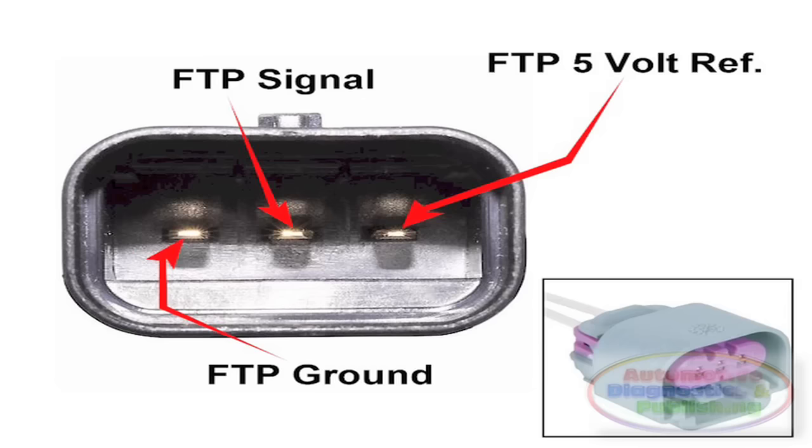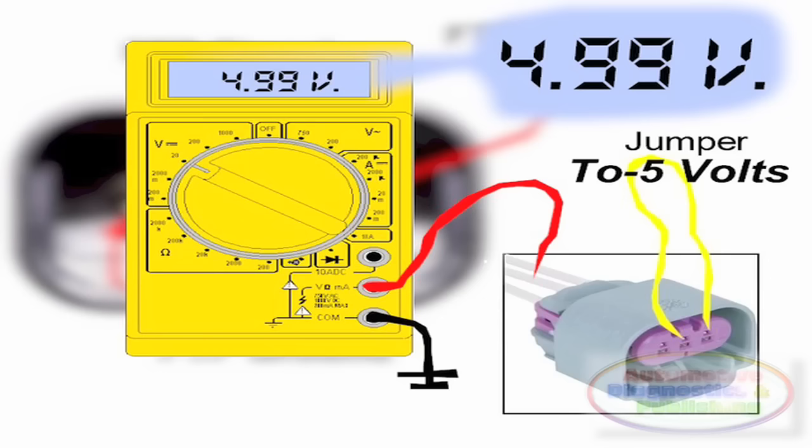Five, you can jump either the sensor ground or five volts to the signal wire and it won't hurt the ECM.